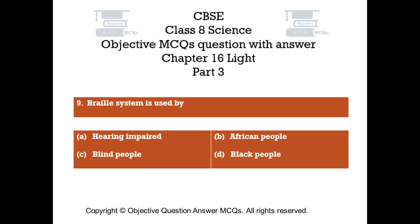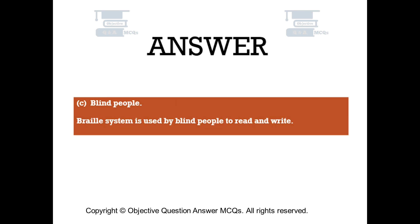Question number 9: Braille system is used by — Option A: Hearing impaired, Option B: African people, Option C: Blind people, Option D: Black people. The right answer is Option C: Blind people. Braille system is used by blind people to read and write.